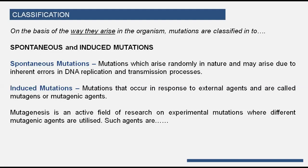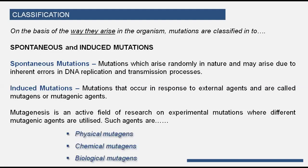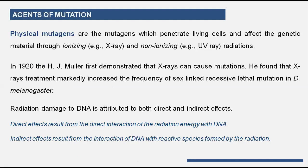The process of causing mutation is called mutagenesis, which is an active field of research where different mutagenic agents are utilized in experimental models. Such agents are physical mutagens, chemical mutagens, and biological mutagens. Physical mutagens penetrate into living cells, reaching and affecting the DNA material. The overall genetic material is affected by ionizing and non-ionizing radiations, through which they can cause mutations.